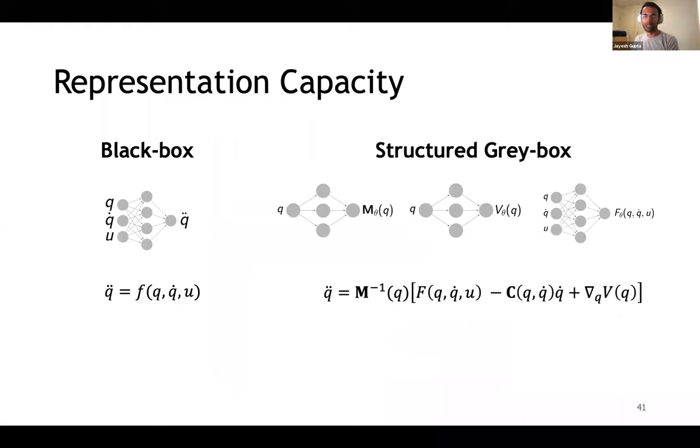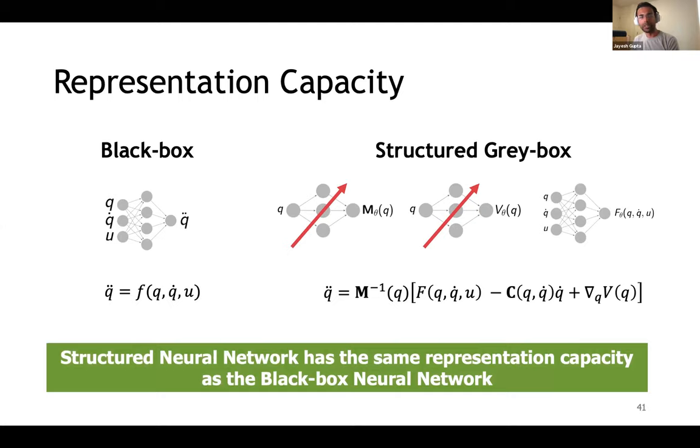One question might come to your mind: did we lose some representation capacity in the process of providing physics-based inductive bias? Notice that the mass matrix and the potential are functions of position, which is technically representable by neural networks. The function approximator modeling a generalized force looks exactly the same as the naive black box modeling approach. Therefore, our structured approach has the same representation capacity as the black box neural network. This formulation is better termed as a structured black box approach. As we'll see later, this structure allows it to learn with a lot less data.